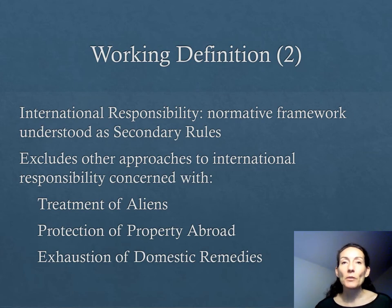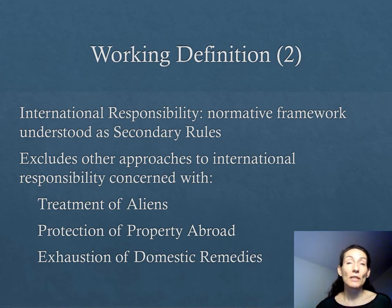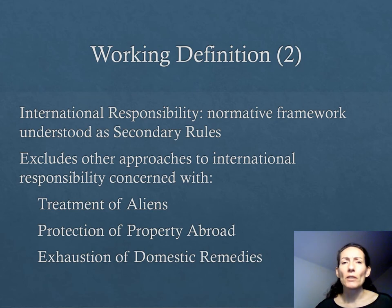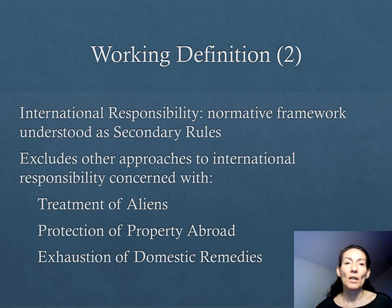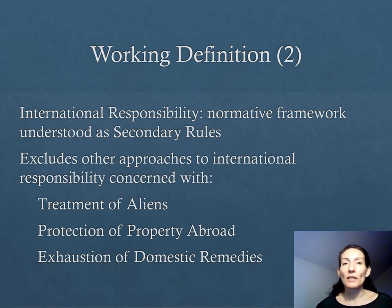Let's explain the difference. Primary rules are those that establish rights and obligations — for instance, the prohibition of smoking in a public space. Secondary rules are those setting out the consequences associated with the breach of that prohibition — for instance, a fine — as well as the processes for its implementation.